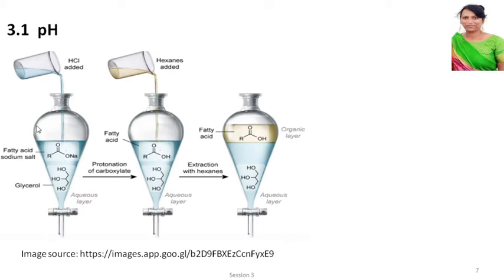Look at this diagram. This is a separatory funnel in which we usually carry out solvent extraction. Consider the aqueous layer to have two compounds: glycerol and a fatty acid in the form of its sodium salt. I want to separate the fatty acid from glycerol. Just add a little bit of HCl and shake well. The salt will be neutralized and will become a fatty acid — RCOOH. So now you have glycerol and the carboxylic acid. This is protonation of the carboxylate.